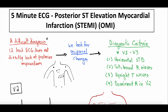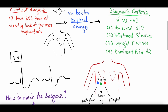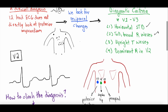What we have to do is look for reciprocal changes. For a typical STEMI in an inferior or anterolateral distribution, you'd see ST elevation above the isoelectric point. Reciprocal changes are ST depressions, and that's what we look for in a posterior STEMI. The diagnostic criteria focus on leads V1 through V3: you're looking for horizontally shaped ST depressions, tall broad R waves, upright T waves, and a dominant R wave in V2.